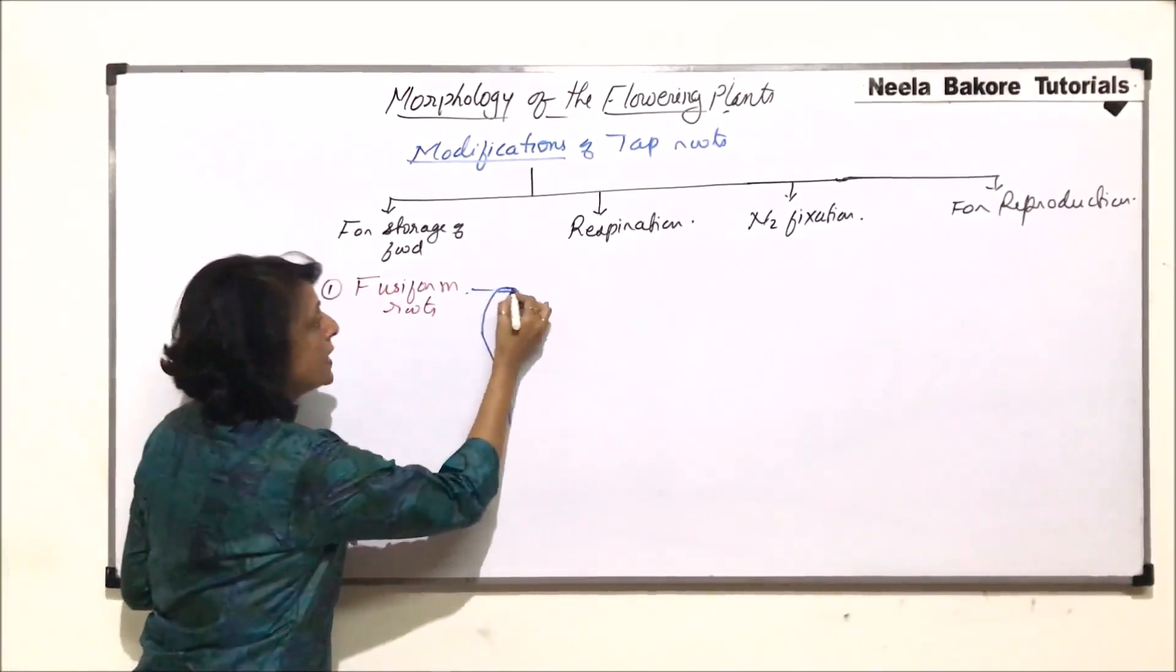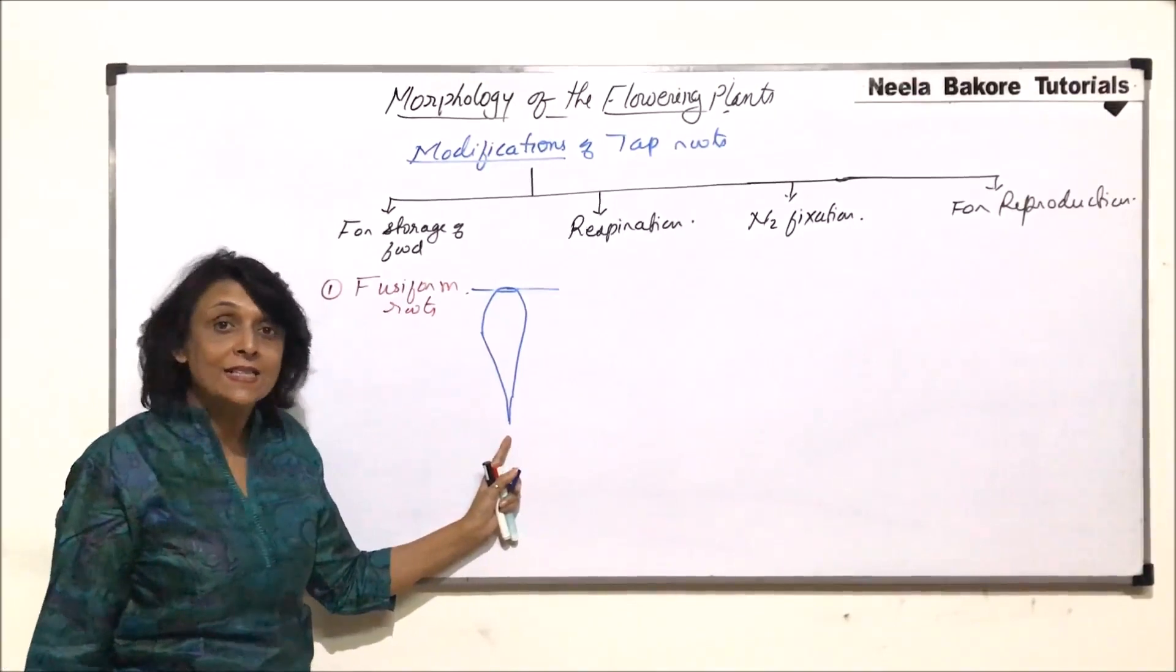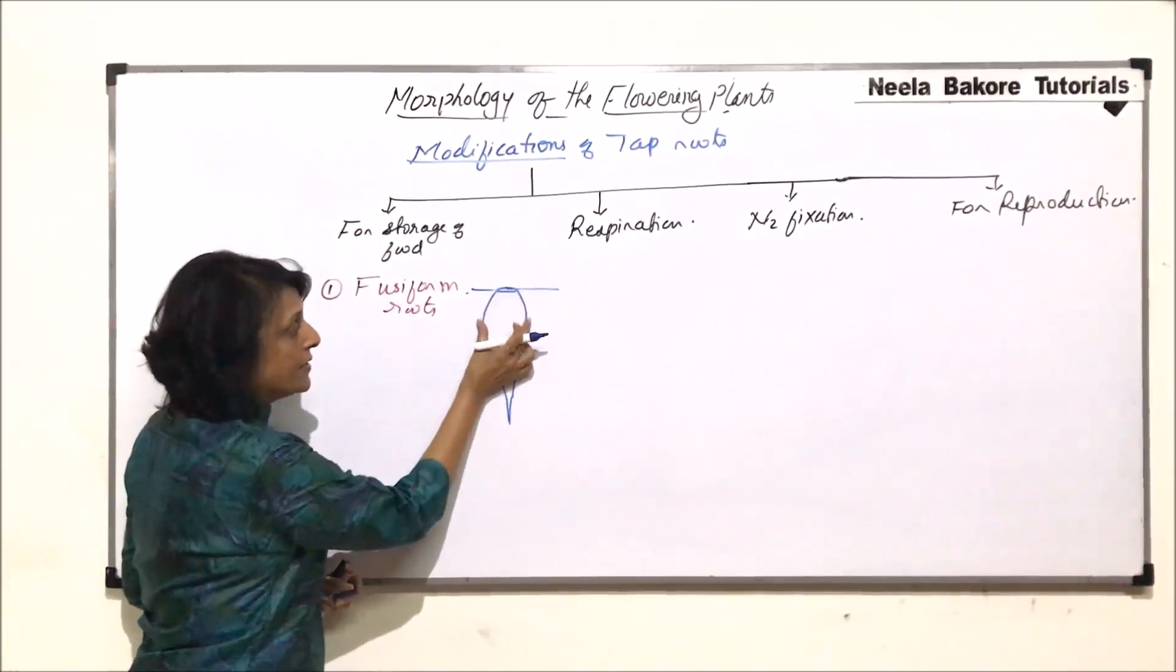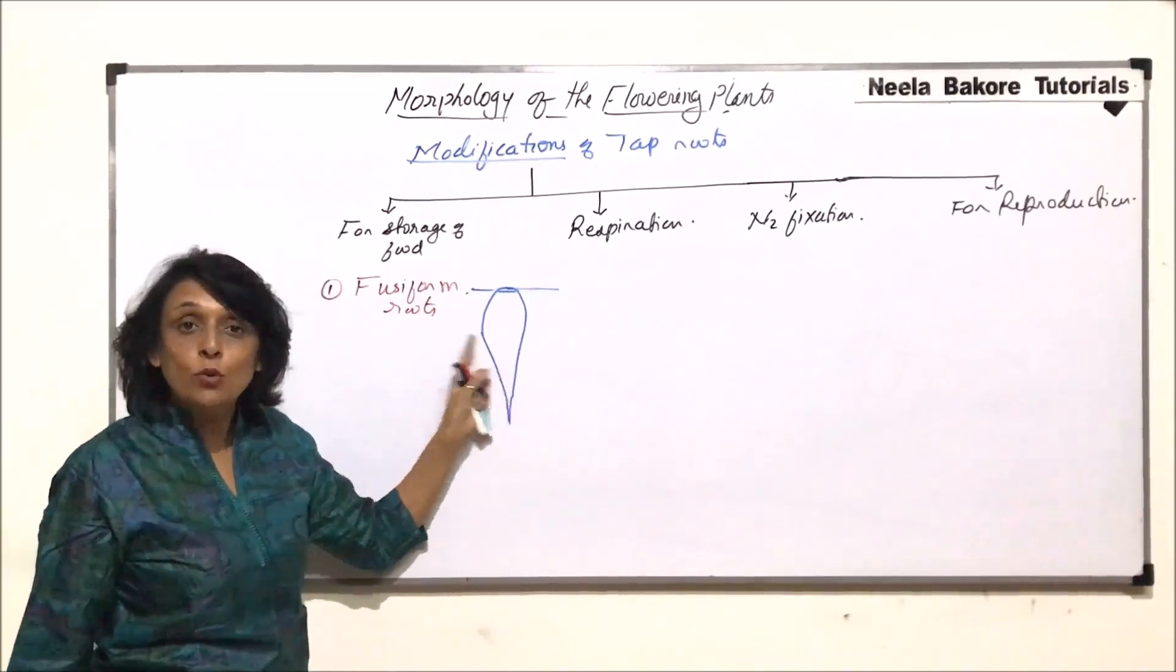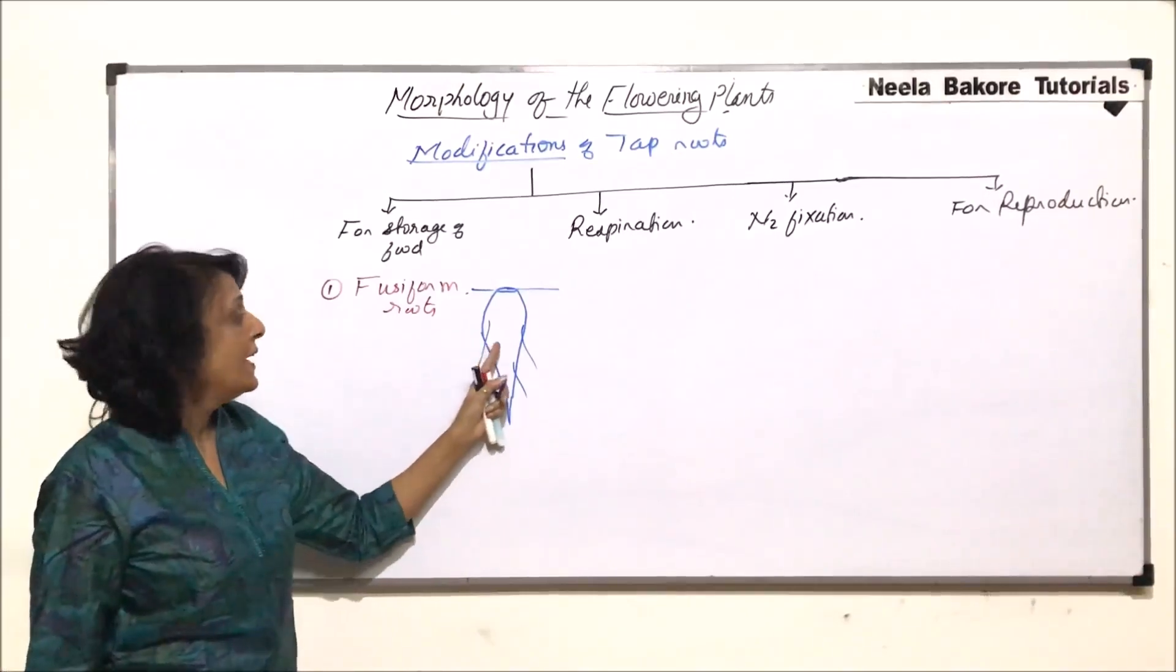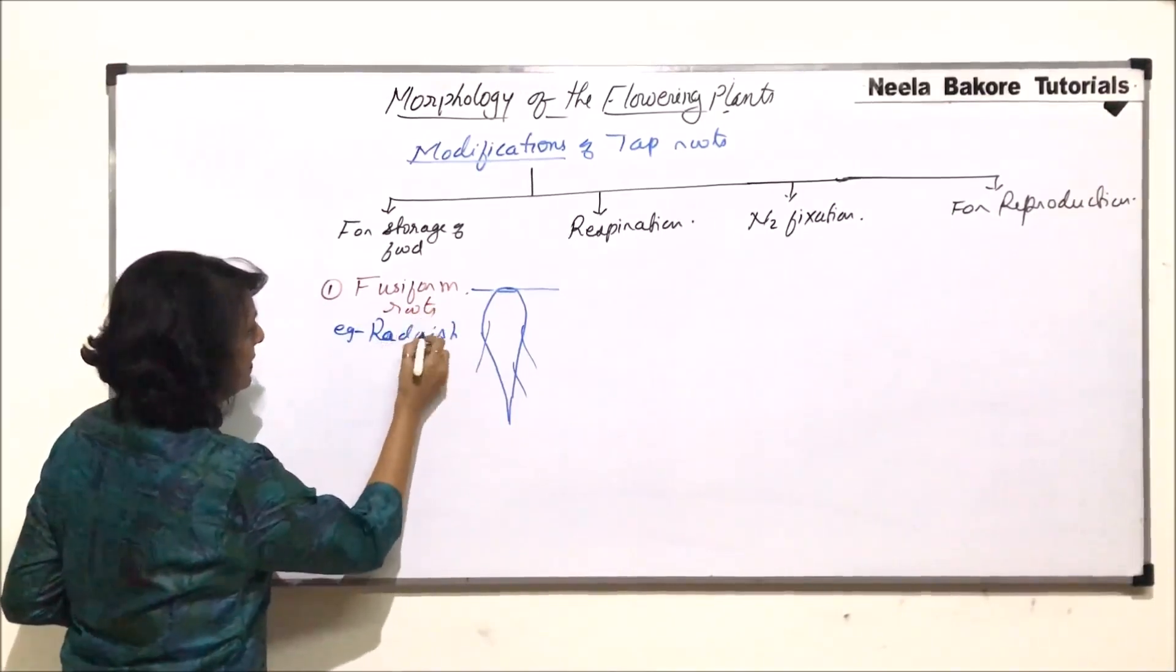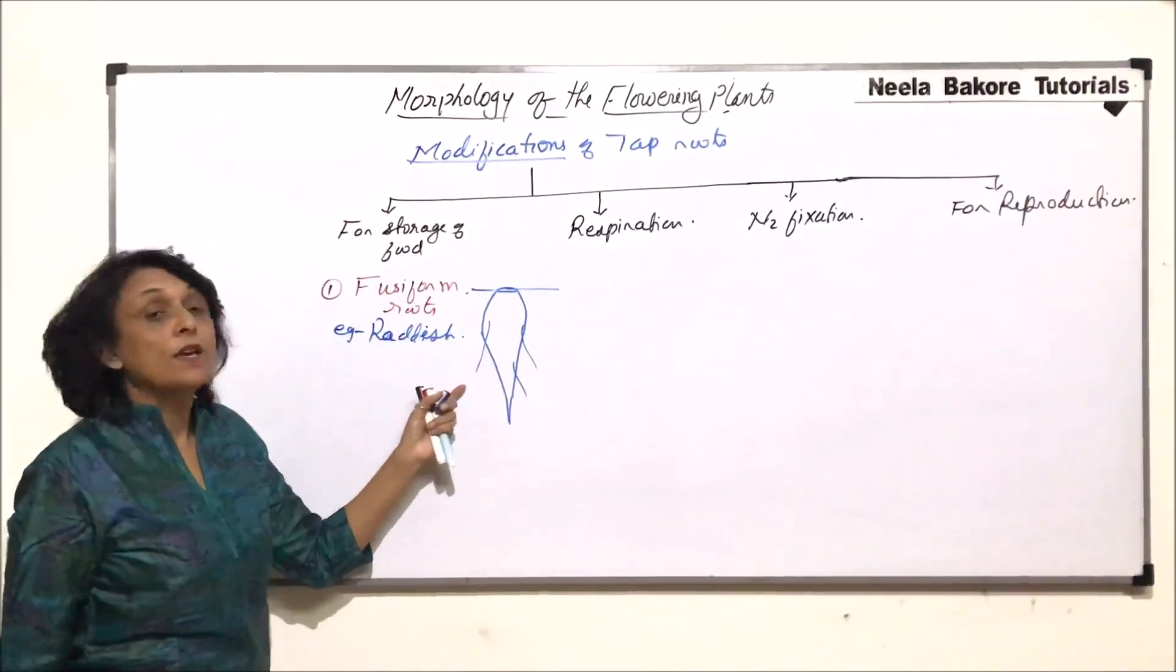I use two words. This is the base part and this is the tip part because when we talk of root tip, this end is the tip part because this is the point from where the root originates and the radical gives rise to this long structure. So this is the base. This is the tip. Base is little narrow. Then it widens in the middle and tapers towards the tip. Such a root is called fusiform. This is the primary root and sometimes we find some very fine hair-like branches arising from this. I am sure you have seen this structure. The example is radish.